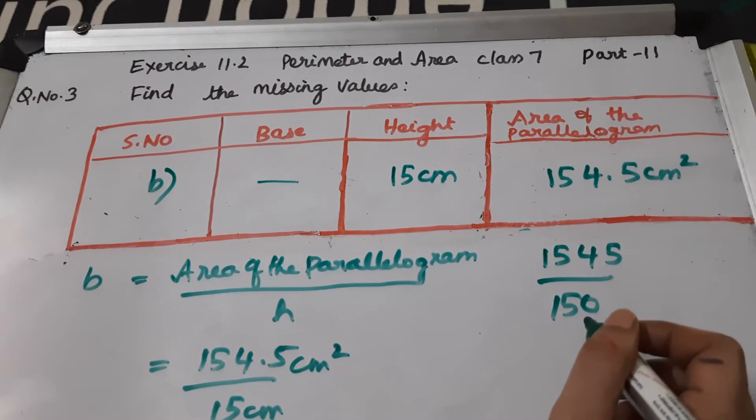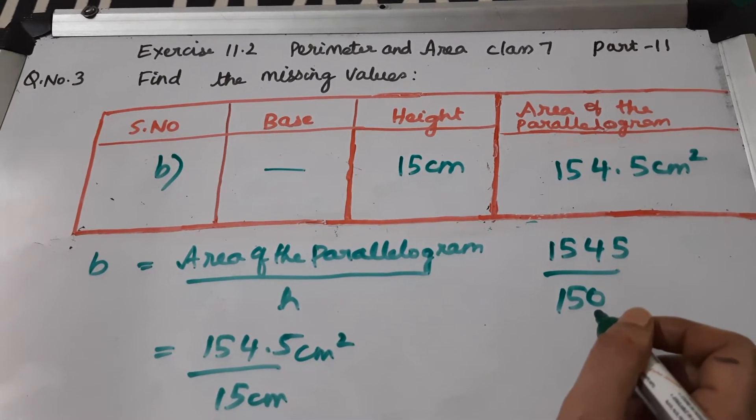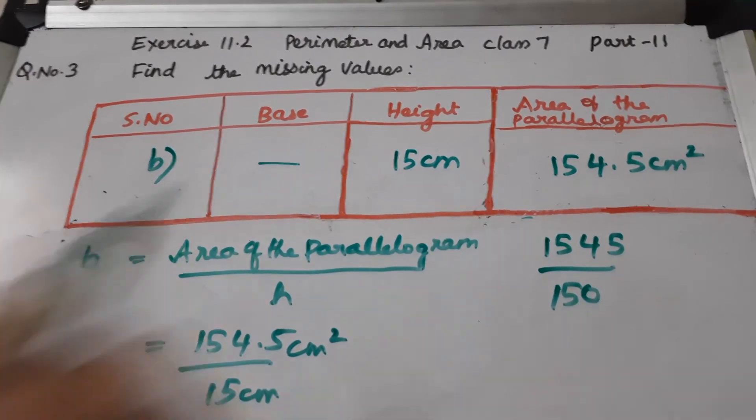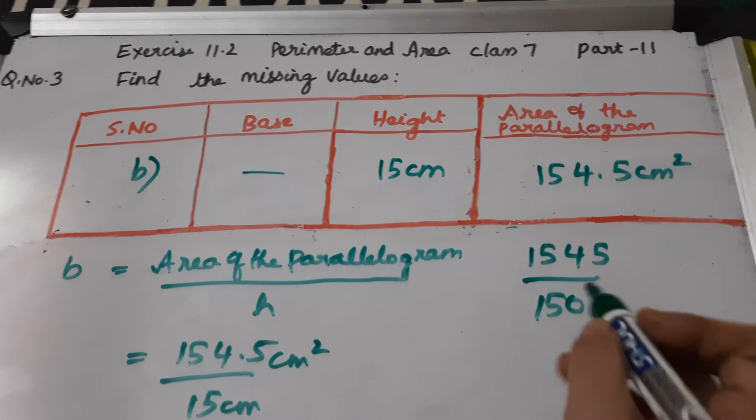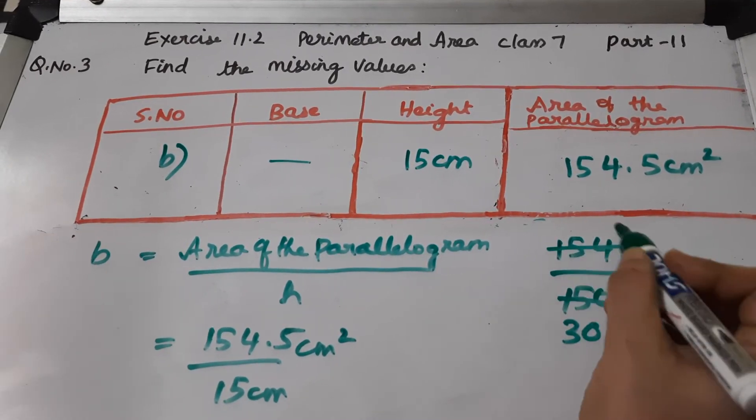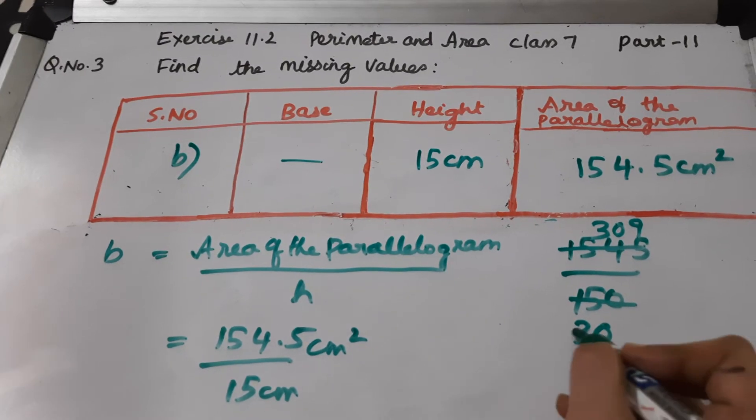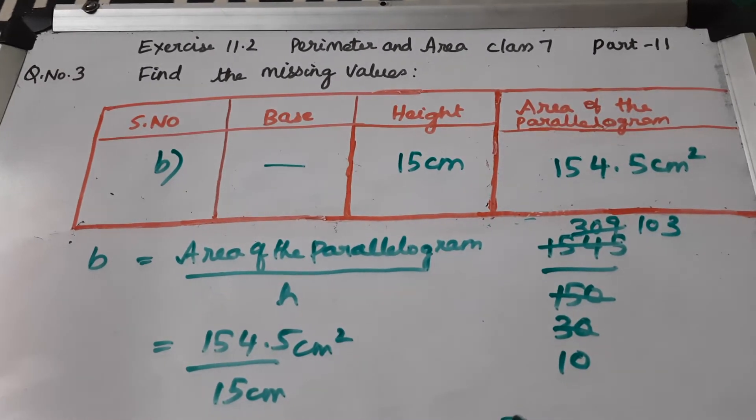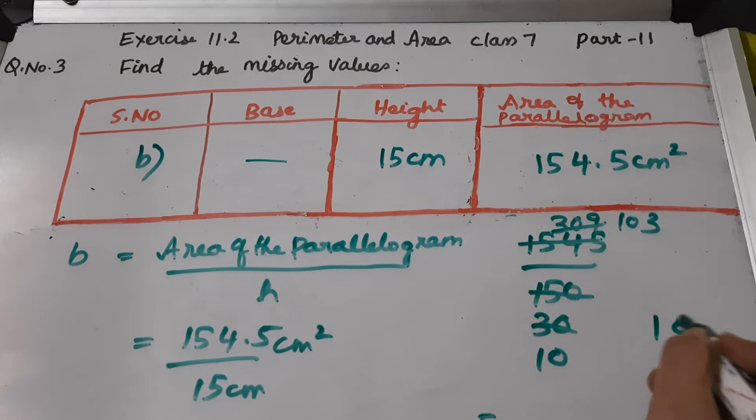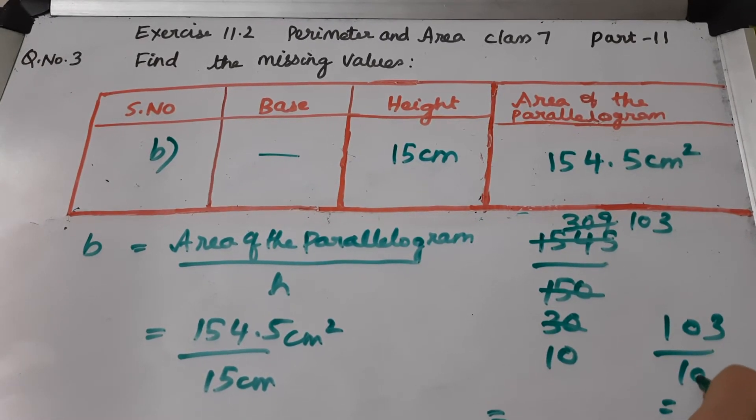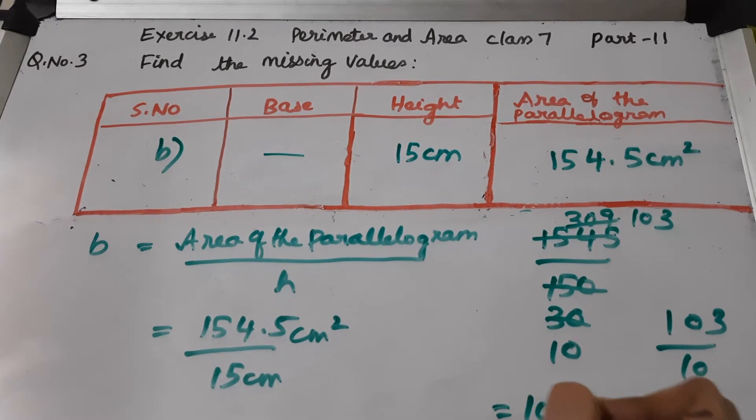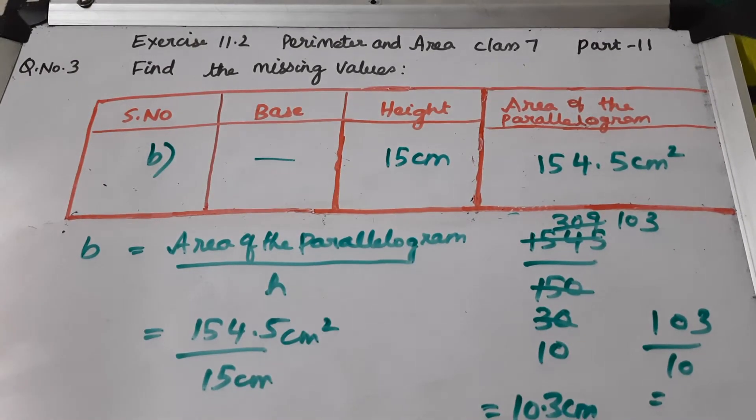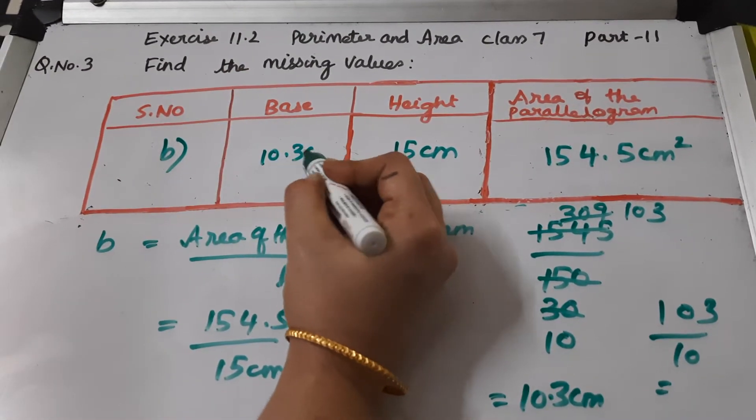Now when you look at this, you have to further simplify it. How will you simplify it? Simplify by tables - 5s, 3s, and so on. This we cannot simplify further. So if it is given like this, there is 1 zero here. If you want to add decimal point here from the right side, this is 10.3 centimeters.